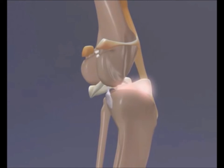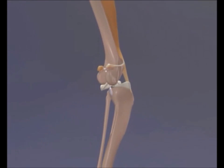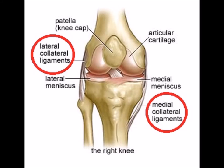The extra capsular medial and lateral collateral ligaments are the predominant prevention of medial and lateral overextension, which can lead to dislocation.